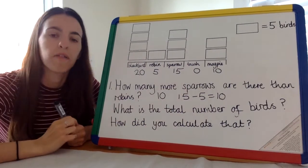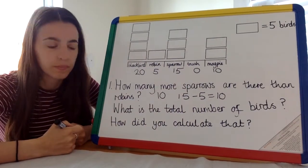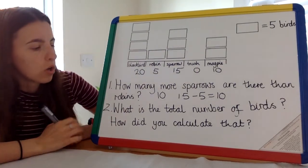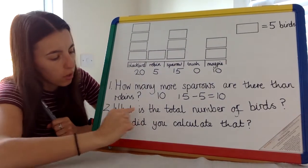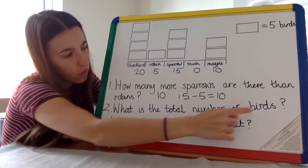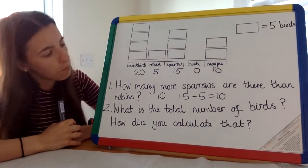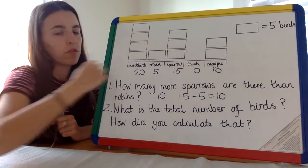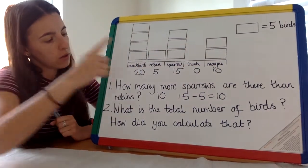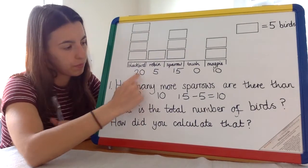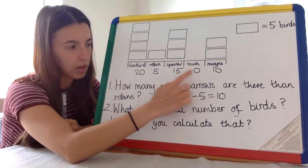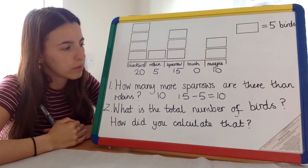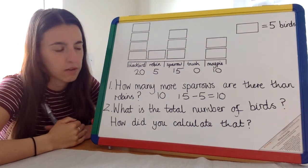Question 2: What is the total number of birds all together? They're talking about the total number of birds all together. So we've got 20 here, 5, 15, 0, and 10. How are we going to count how many birds there are all together?